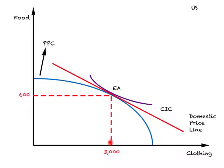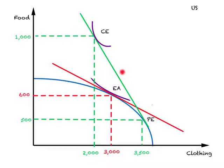You drop this point to the horizontal axis and find that in autarky the U.S. produces and consumes 3,000 units of clothing. Taking the point to the vertical axis, the U.S. produces and consumes 600 units of food. So Ea represents equilibrium in autarky for the U.S., where the U.S. produces and consumes 3,000 units of clothing and 600 units of food.